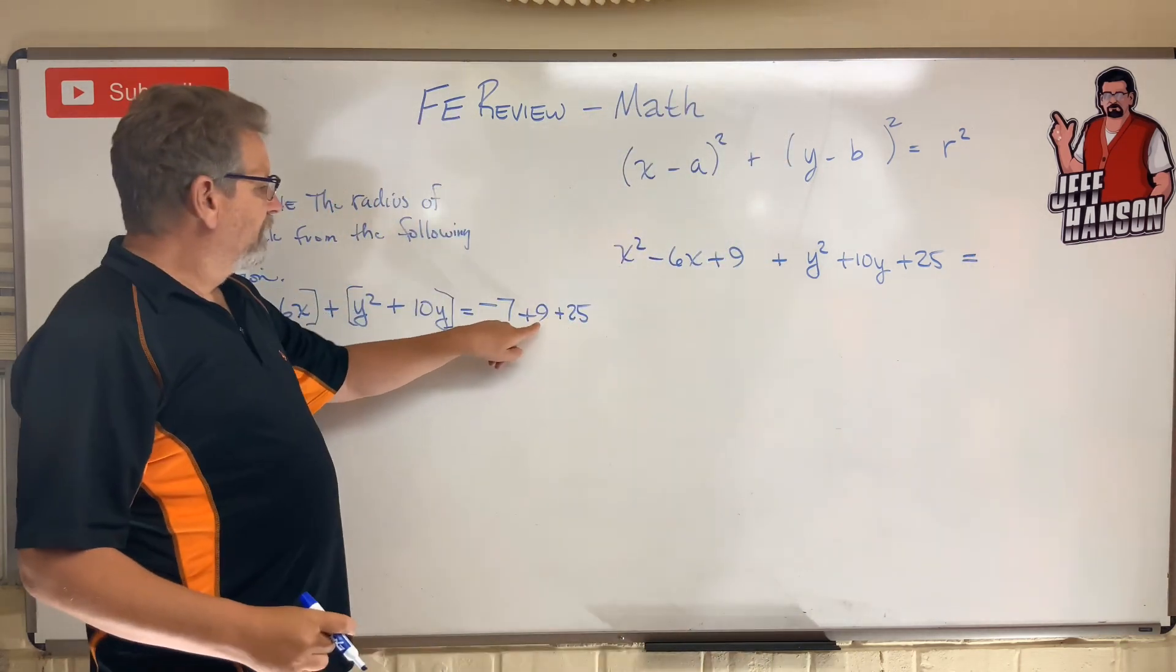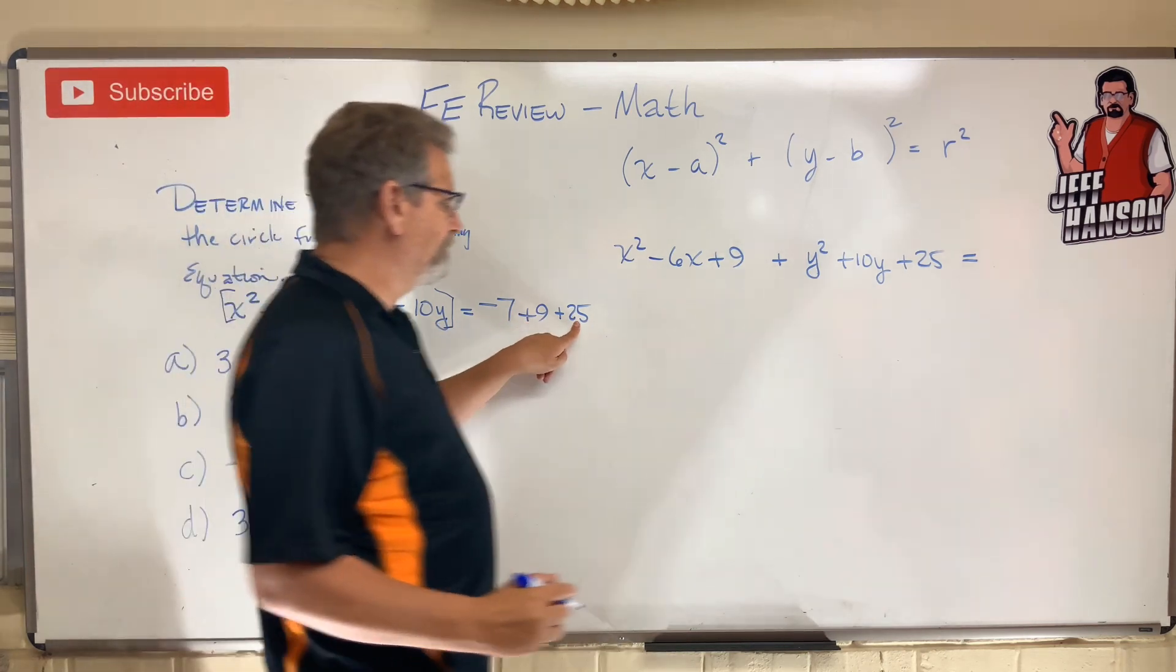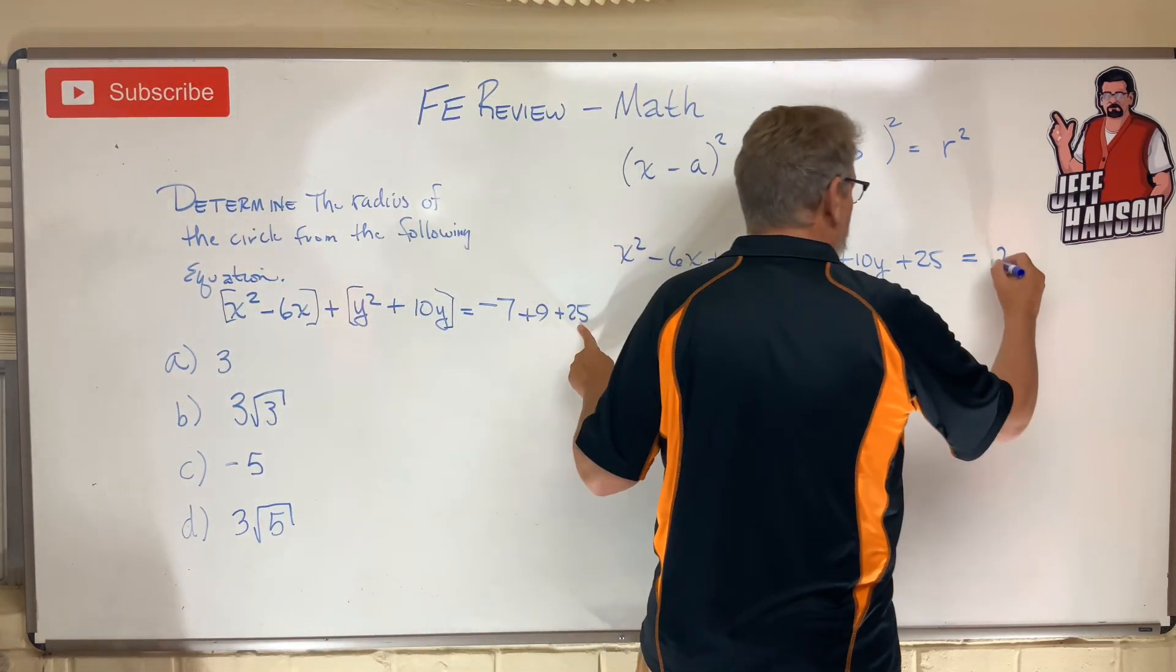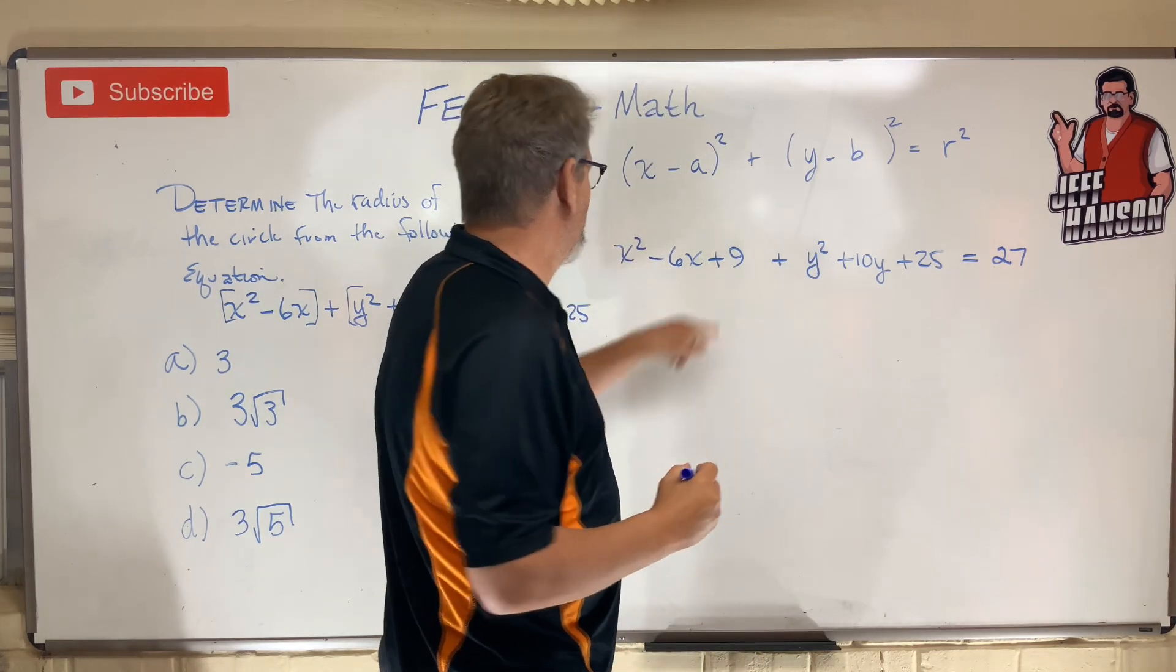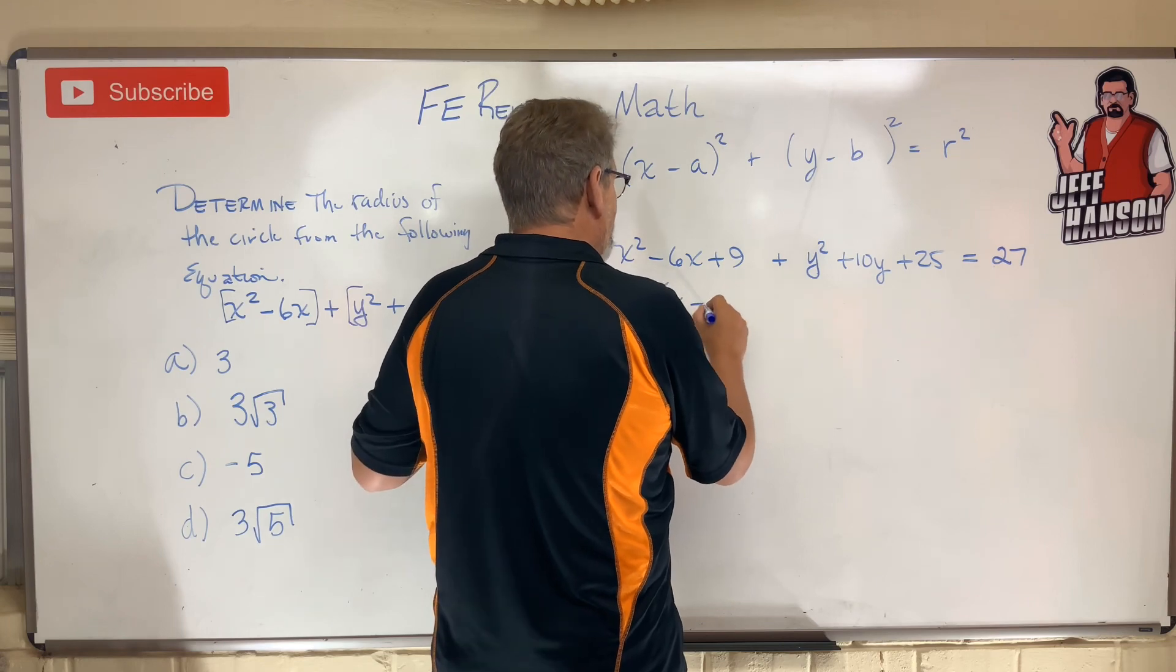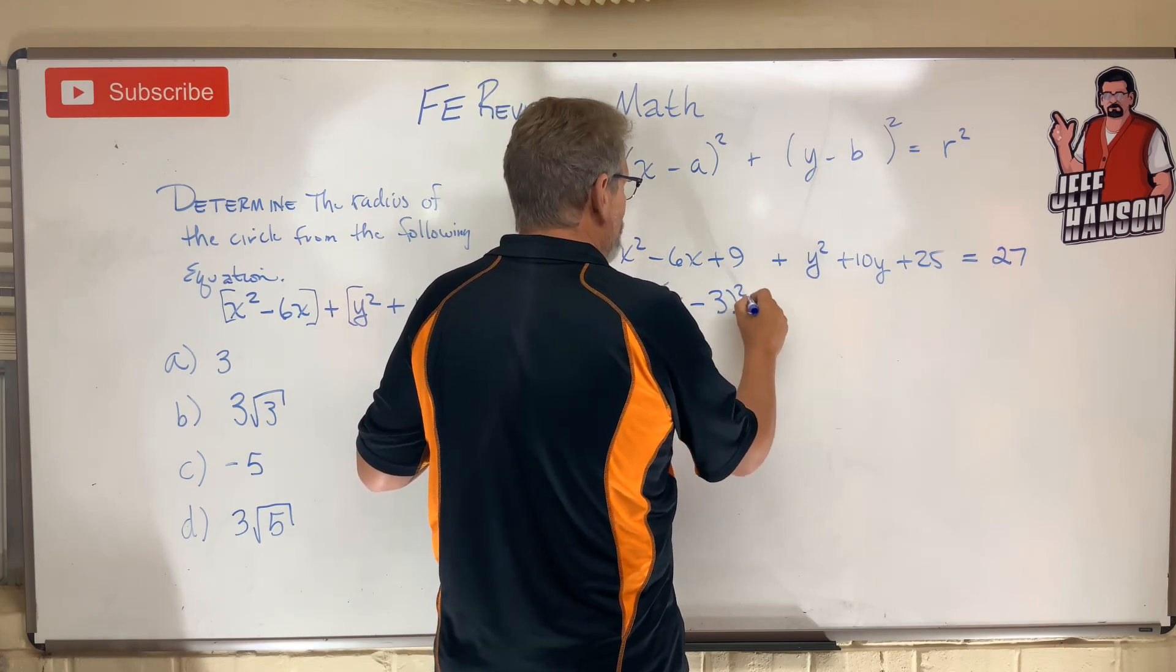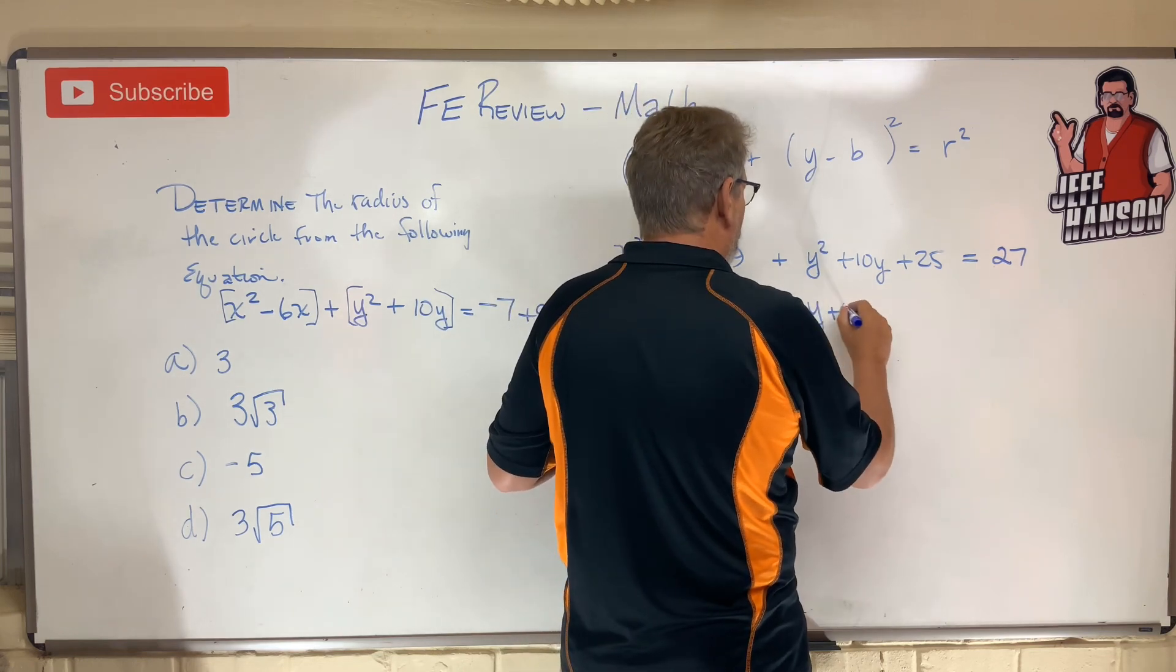And what is that equal to? Well, that is (x - 3)² + (y + 5)² = 27.